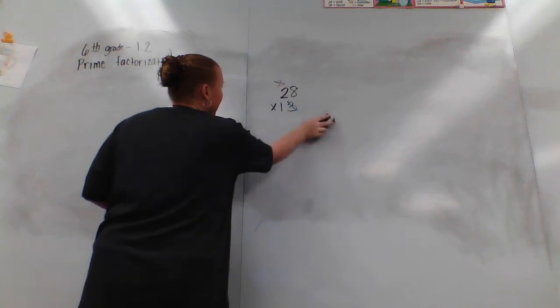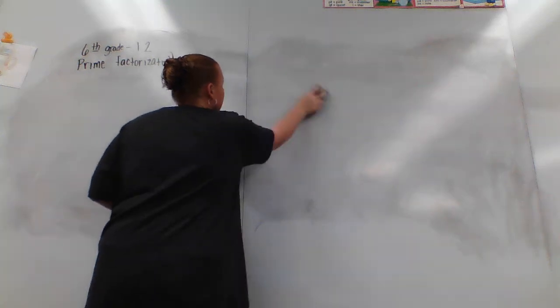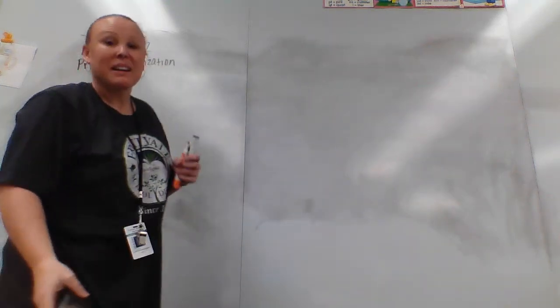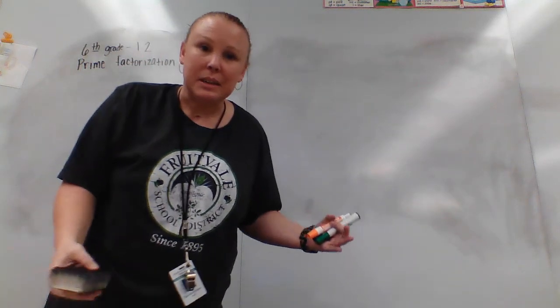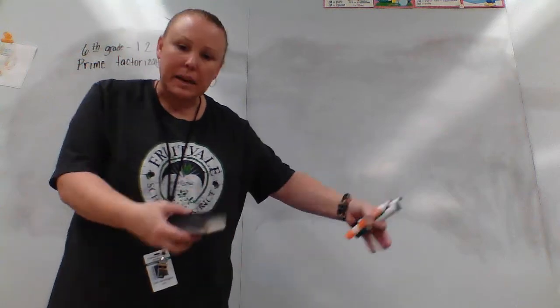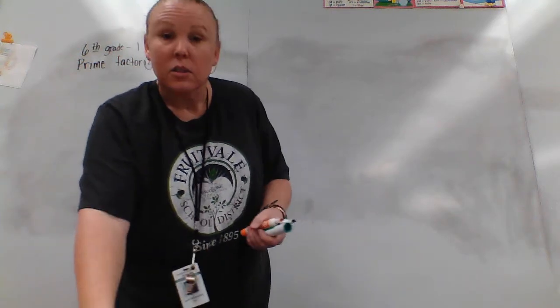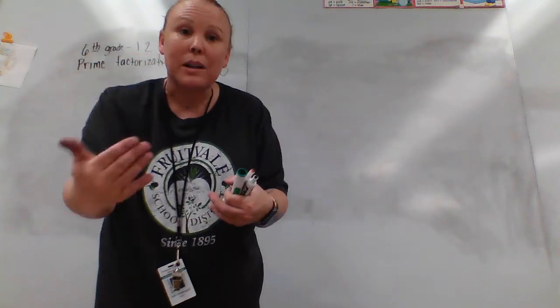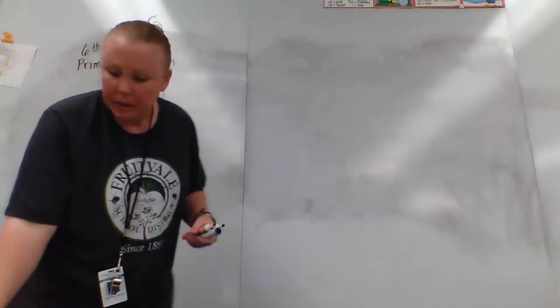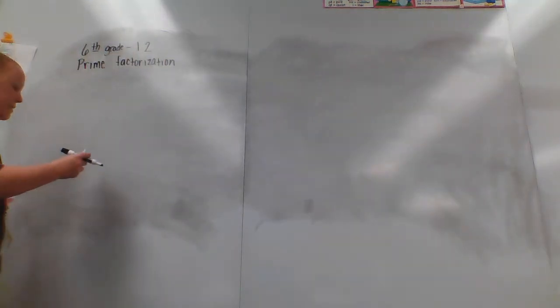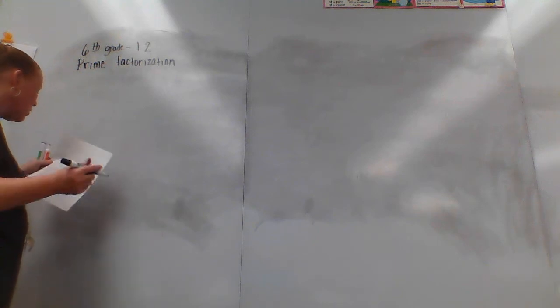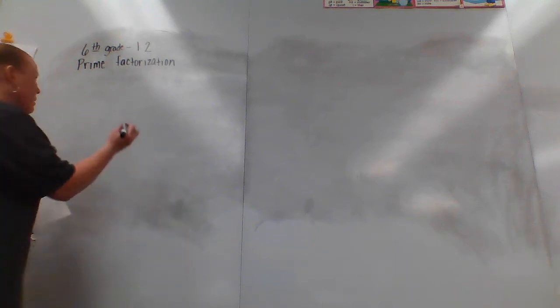Remember, you can always go back and write the work down. It's almost better to watch me do it and then go back and write down your work so you can watch while I'm doing it and catch what I'm doing. Number 10 says a computer code is based on the prime factors of 160 — we need to write down the prime factors. So we're going to write our 160 and make our tree.